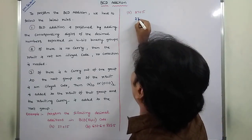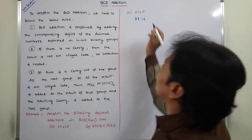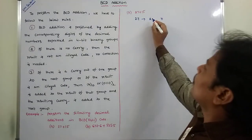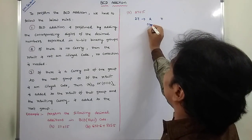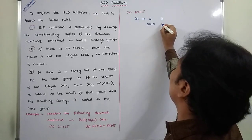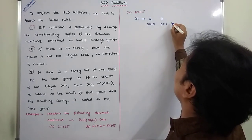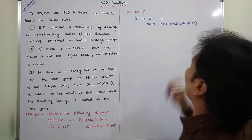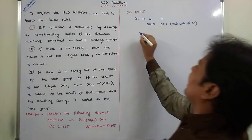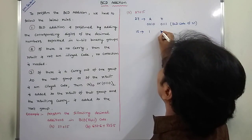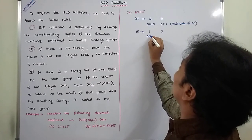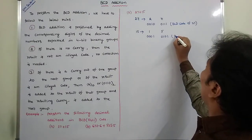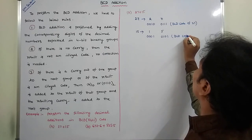So 27: the digits 2 and 7 are separated. 2 can be represented by 0010 and 7 can be represented by 0111. This is the BCD code of 27. Next, 15: this is the BCD code of 15.